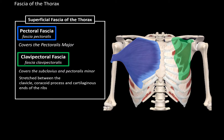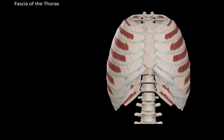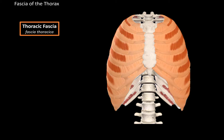So when we remove them, we will see the actual anterior wall of the thorax. The whole external surface of the thorax is covered by a fascia called the thoracic fascia, as you see here. It's a fascia that lies over the surface of the ribs and the intercostal spaces.